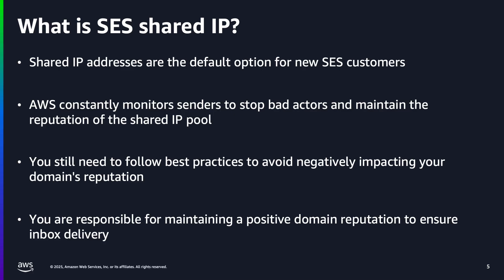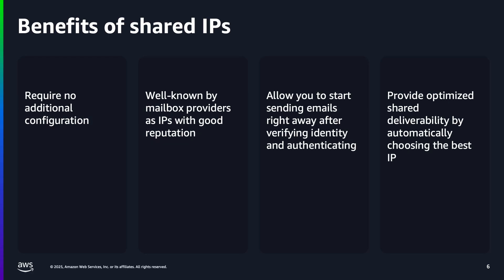Amazon SES offers shared IP addresses as a default option for new customers. These IP addresses are shared across multiple SES users. Amazon SES constantly monitors senders and blocks bad senders who send unsolicited emails to maintain the reputation of the shared IP pool. The benefit of using shared IP addresses is that they require no additional configuration and are well-known by mailbox providers as IPs with good reputation. It also provides optimized shared deliverability by automatically choosing the optimal IP to use when sending emails, which helps improve delivery of messages to the target email recipients. Even while sending in the shared IP pool, you will still need to follow sending best practices to avoid accumulating a negative reputation that could pause your account's ability to send email.